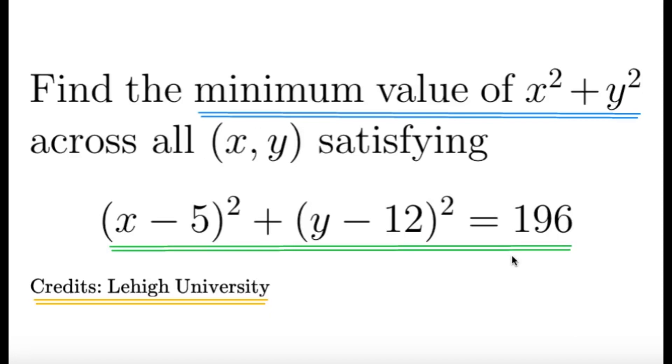Hello, hello. It's Dumflet here. Here's an item on algebra. Find the minimum value of x squared plus y squared across all x, y satisfying quantity x minus 5 squared plus y minus 12 squared equals 196. Credits to the Lehigh University high school math competition for this item.